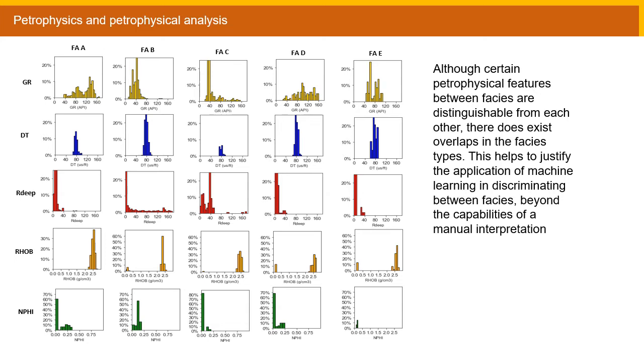The machine learning in this study uses petrophysical data to build a prediction model for the interpreted wells. Because of this, there needs to exist quantitative justification for using machine learning to assign facies rather than a manual interpretation. Here are several histograms which represent each petrophysical data type for each facies. And although certain petrophysical features between these facies are distinguishable from each other, there are overlaps, for example the gamma ray between facies B and facies C. These overlaps help to justify, from a petrophysical point of view, the application of machine learning in discriminating between facies beyond the capabilities of a manual interpretation. The machine learning algorithms can better identify the minute differences between facies petrophysical signatures and apply that training to the models.